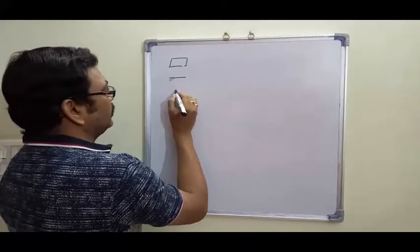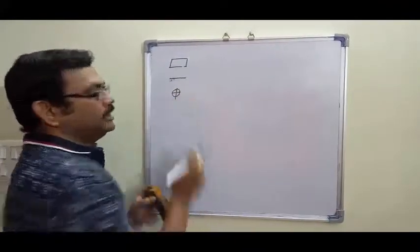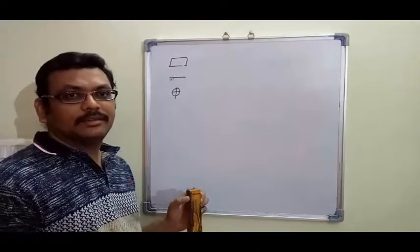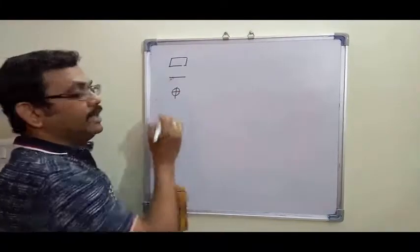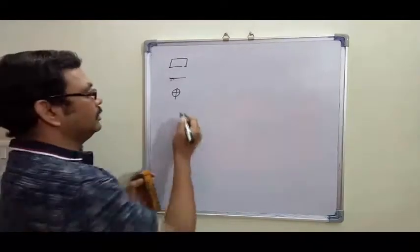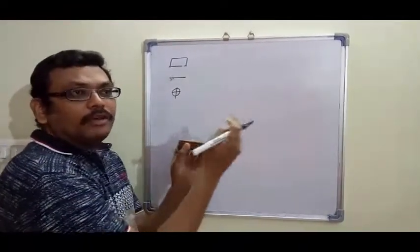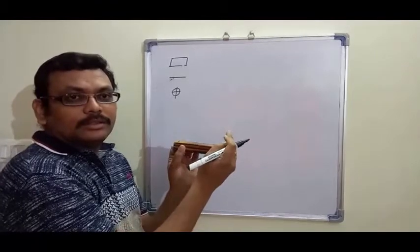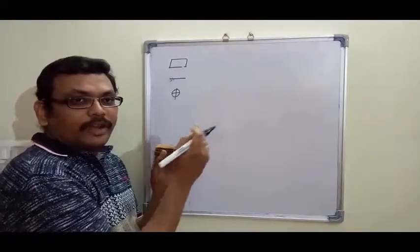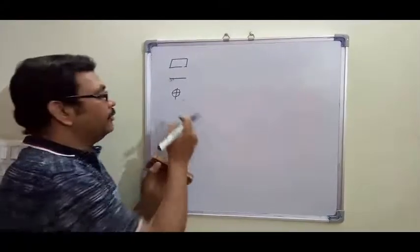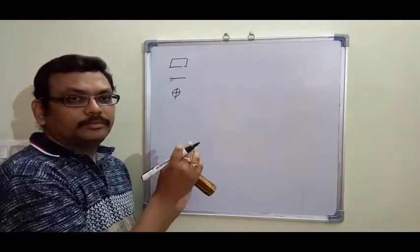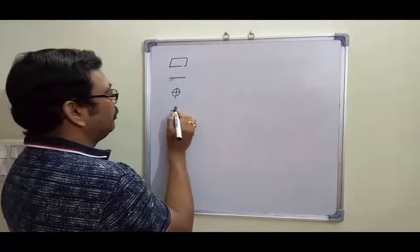Next, position — this is for circular components. As the symbol indicates, it is used for circular components to define how much the position of a hole can vary. It defines about the position of a hole or a slot.